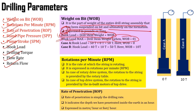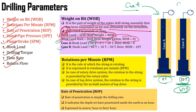There are two cases: case A and case B. In case A, my bit has not yet touched the formation. At that time, the weight on bit would be zero because the bit has not yet touched the formation. The hook load will be the total weight of the drill string — in this case, 50 tons. In case B, weight on bit of 10 tons has been given. At that time, if I want to find out the hook load, that would be equal to my drill string weight plus my weight on bit.